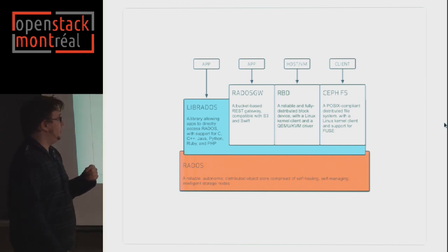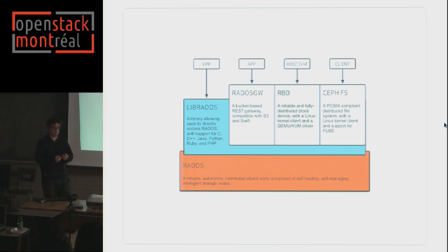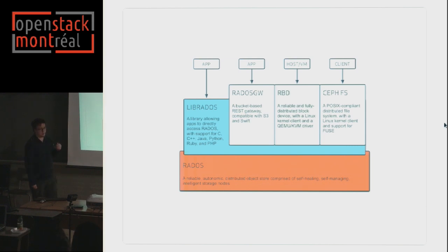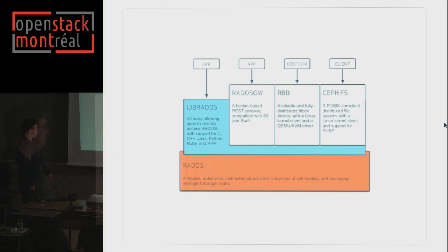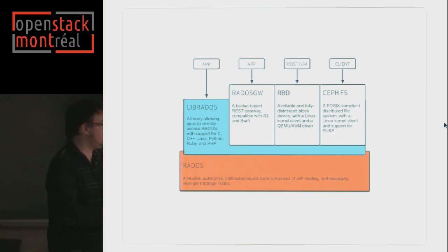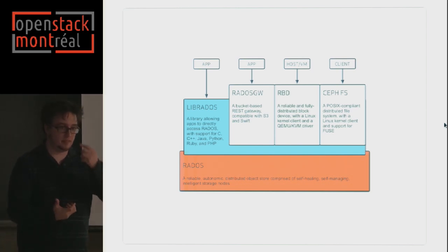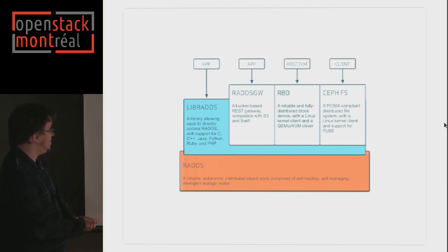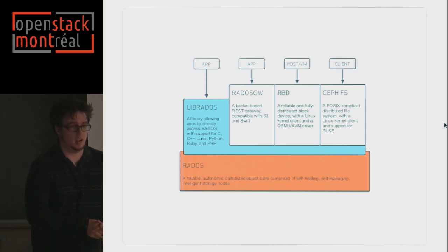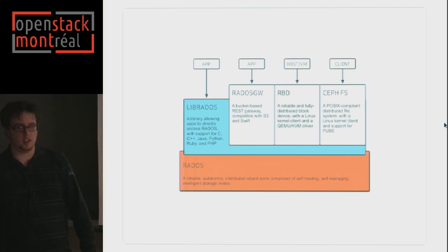There are components provided directly within Ceph that use librados and allow you to work with Ceph. You have RADOS Gateway — it's a REST interface to RADOS that allows you to use Ceph as an alternative to Swift. It provides an API compatible with Amazon S3 and Swift. You have RBD — RADOS Block Device — which allows you to use Ceph for block devices, like a hard drive over network (think iSCSI). And then there's CephFS, a distributed file system, similar to GlusterFS.